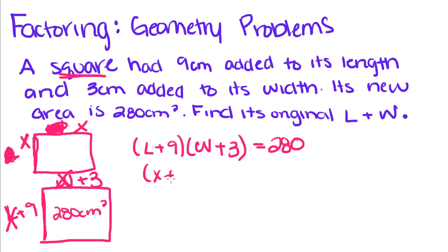So when we rewrite the area we get X plus 9 times X plus 3 equals 280. Now we have to FOIL this out in order to set this equation equal to 0. So X squared plus 3X plus 9X plus 27 equals 280.